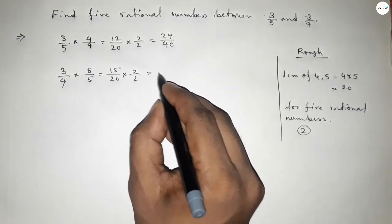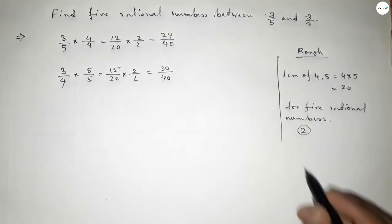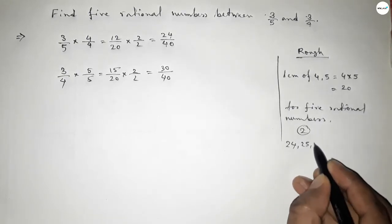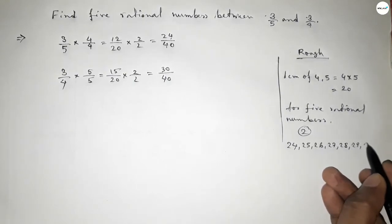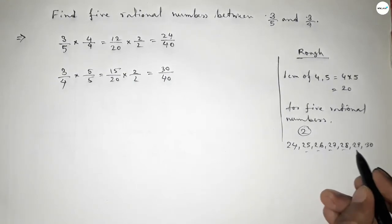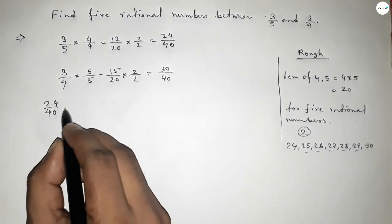Now this is 24 over 40 and this is 30 over 40. Now between 24 to 30 we can get these natural numbers, and by these natural numbers we can form rational numbers. We have to find 5 rational numbers.